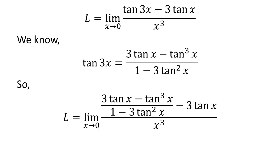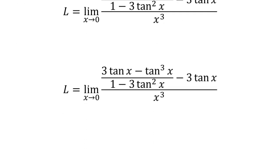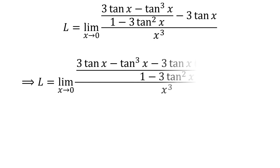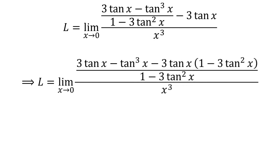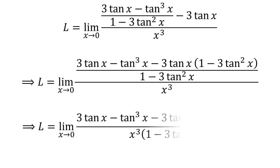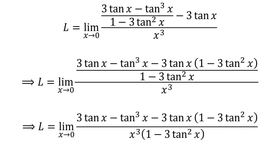Applying the above identity and adding the numerator fractions, further simplification gives us L is equal to the limit of 3 times tangent of x minus cube of tangent of x minus 3 times tangent of x times 1 minus 3 times square of tangent of x, upon cube of x times 1 minus 3 times square of tangent of x, as x approaches 0.